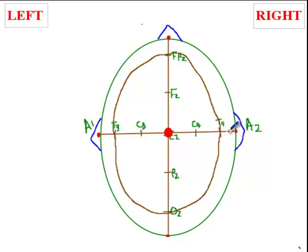Now, you've bisected this line, which you had drawn between the preauricular points. So, this confirms the position of T4 and T3. So, let's put some electrodes there.